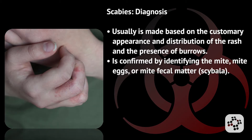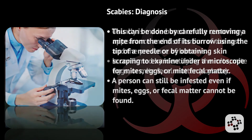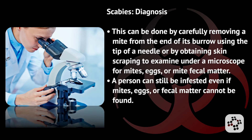How do we diagnose scabies? Diagnosis is usually made based on the customary appearance and distribution of the rash and the presence of burrows. It is confirmed by identifying the mite, mite eggs, or mite fecal matter. This can be done by carefully removing a mite from the end of its burrow using the tip of a needle, or by obtaining skin scrapings to examine under a microscope for mites, eggs, or mite fecal matter. It is important to remember that a person can still be infested even if mites, eggs, or fecal matter cannot be found.